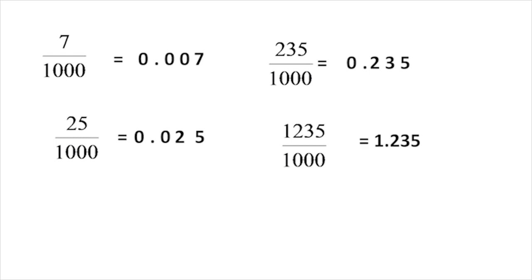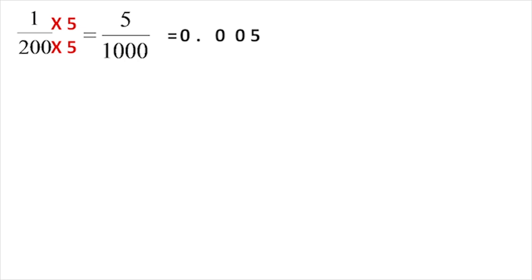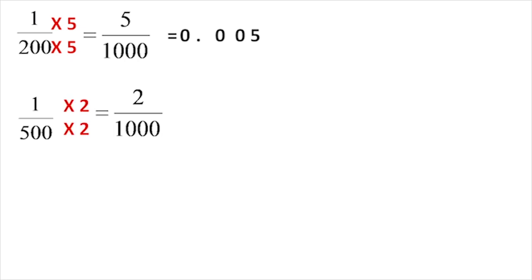We add 3 digits to convert to 1000 as denominator. For 1/2000, multiply by 5 to get denominator 10000 — adding 4 digits. For 1/500, multiply by 2 to get denominator 1000, giving 3 decimal digits.